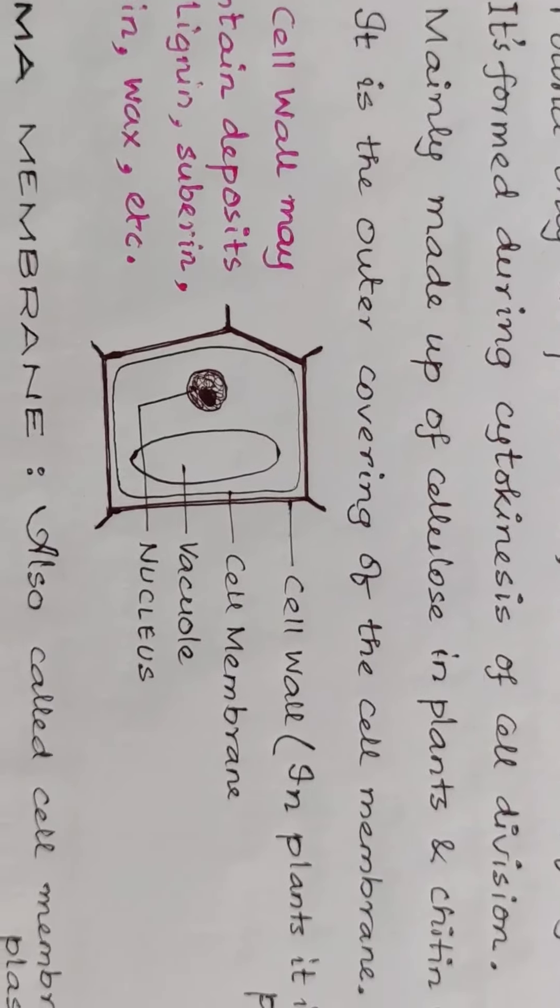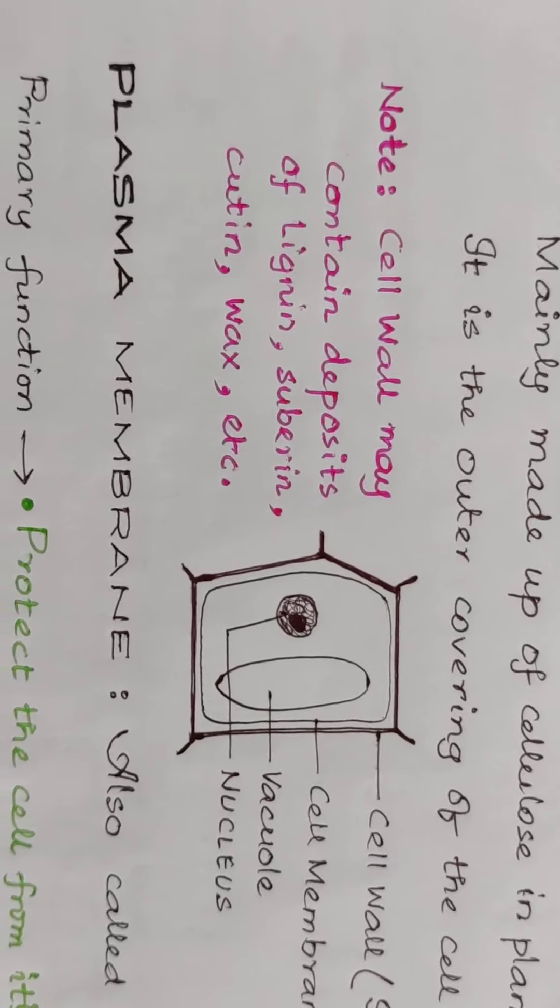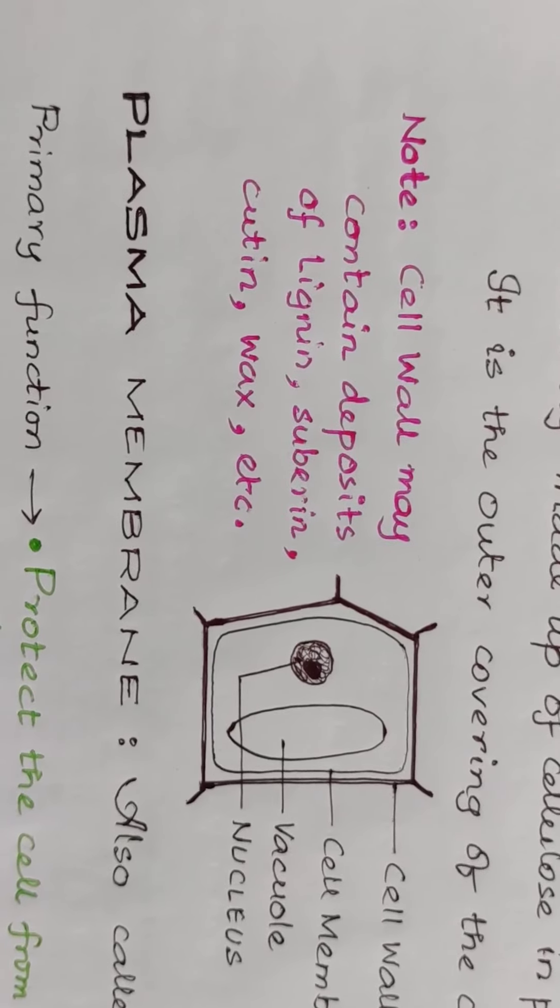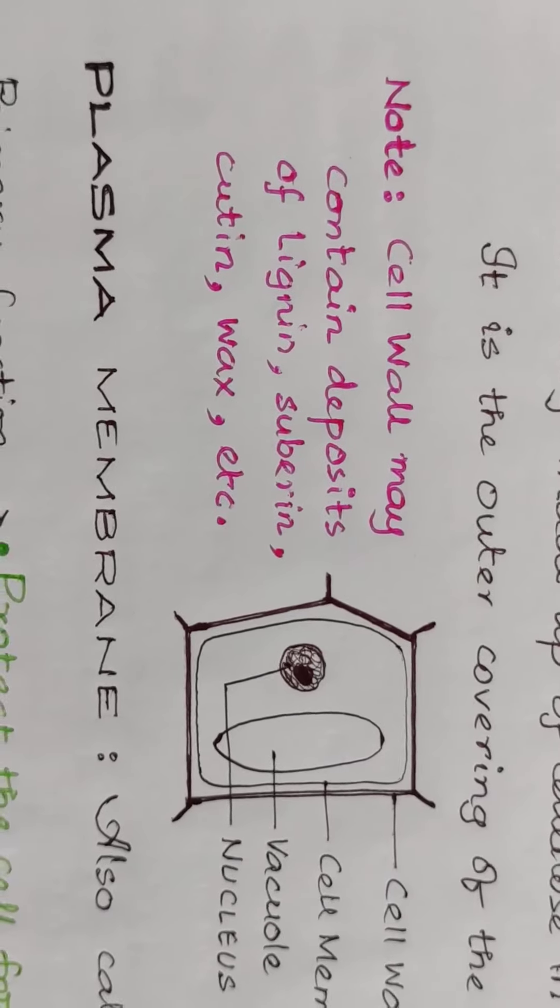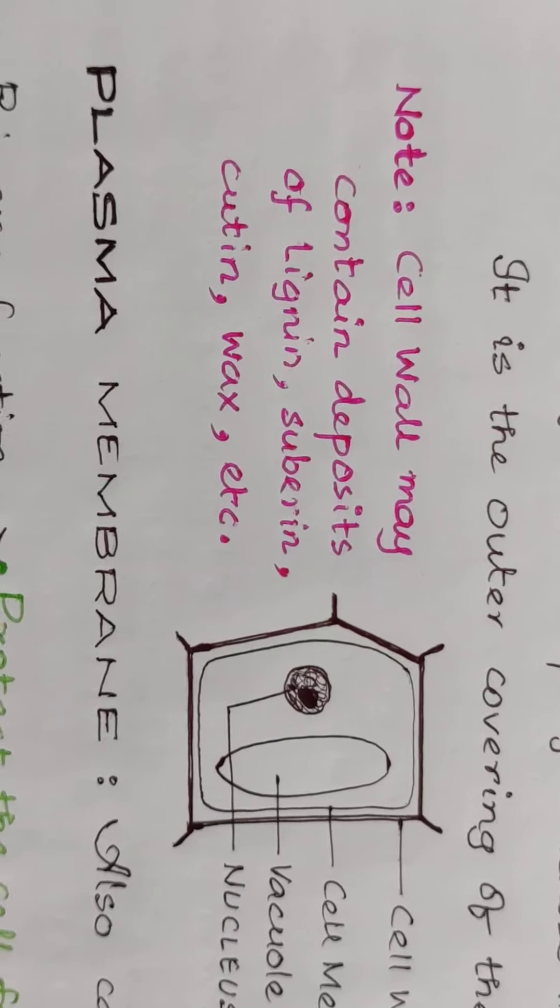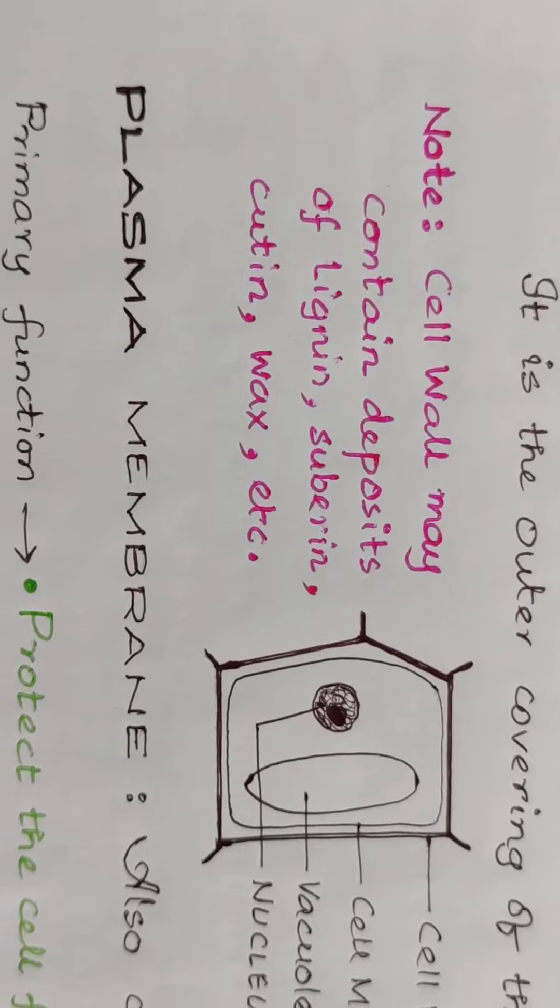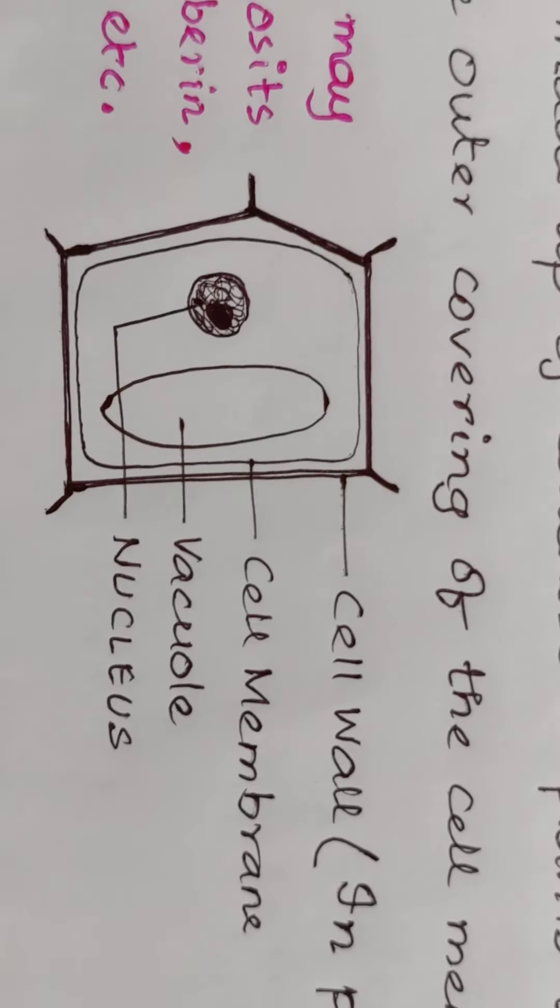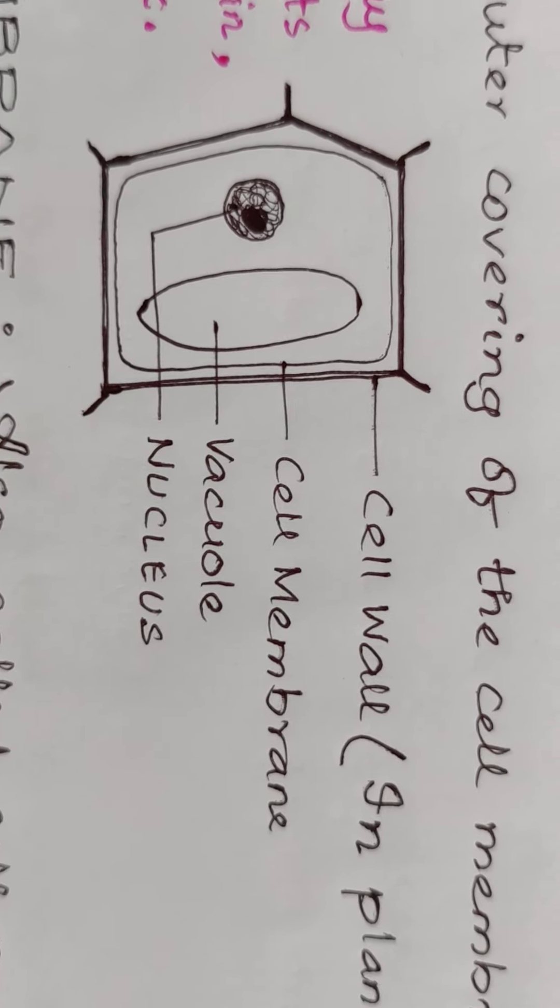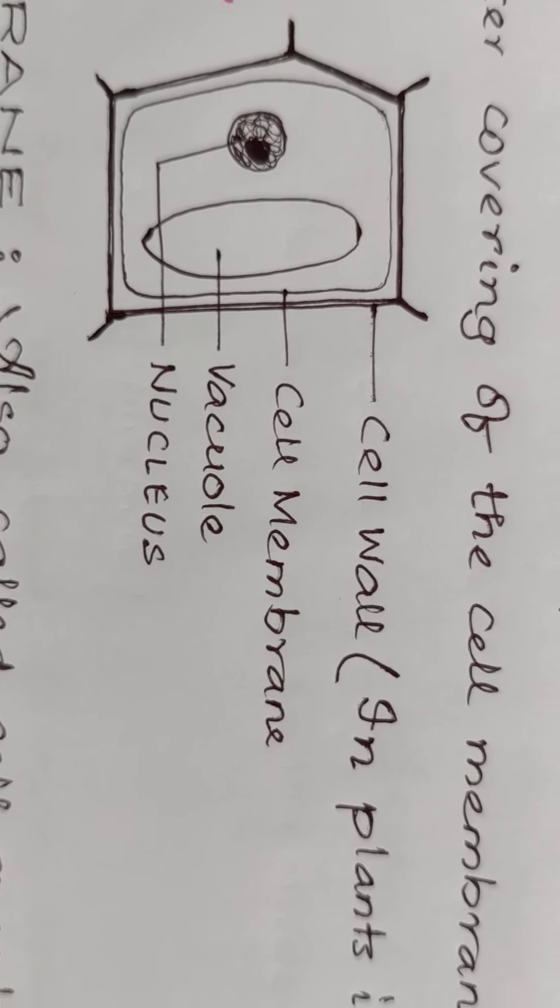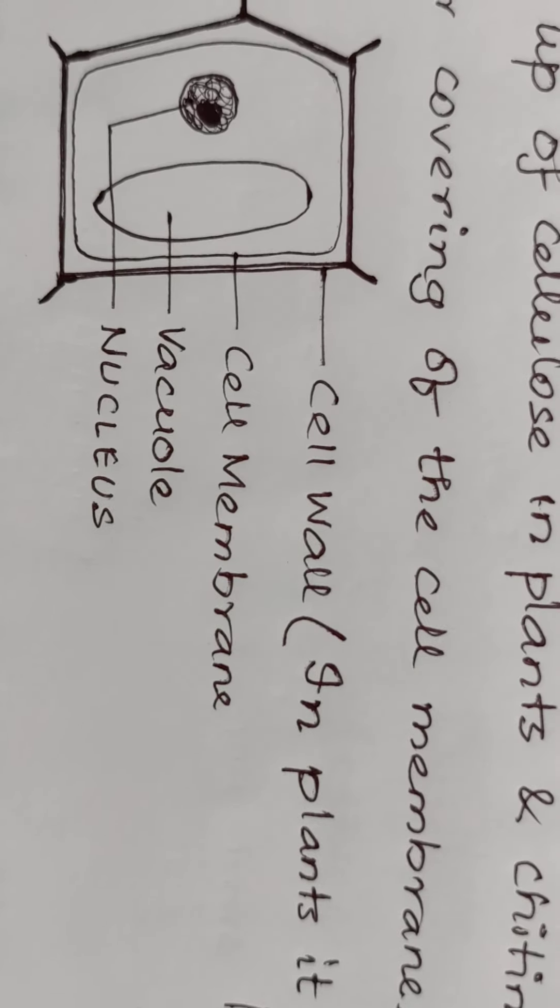Cell wall is the outer covering of the cell membrane. There is something to note: the cell wall may contain deposits of lignin, suberin, cutin, wax, etc.